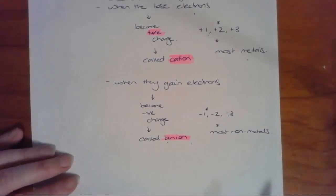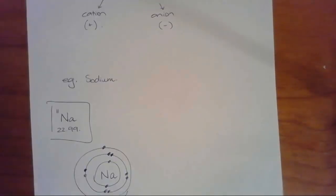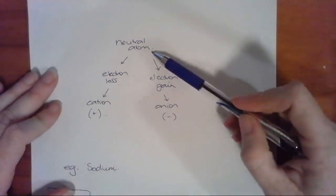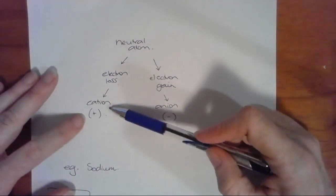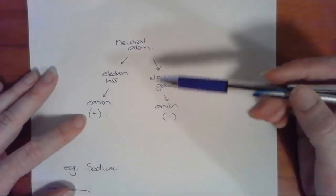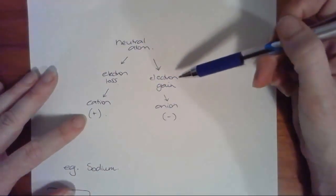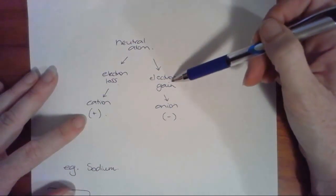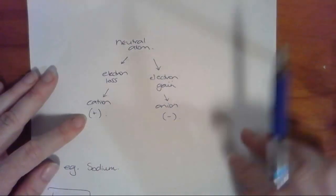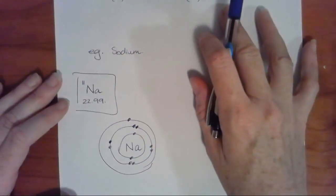Super quick summary: neutral atom, electron loss makes it a cation with a positive overall charge +1, +2, +3, sometimes +4 but pretty rare. And electron gain makes it an anion with an overall negative charge.